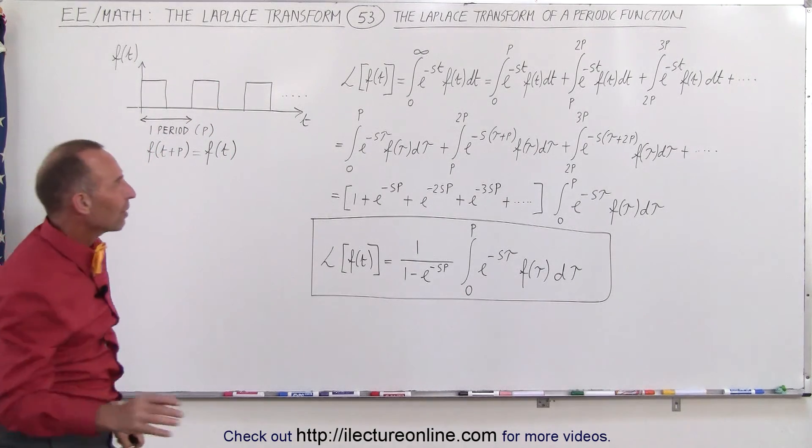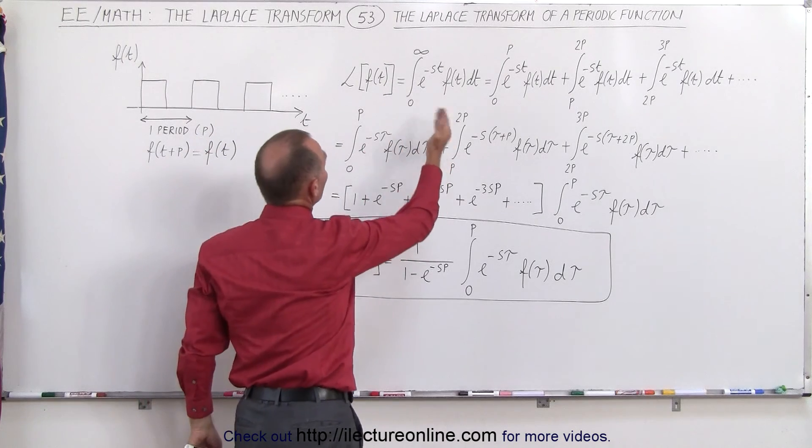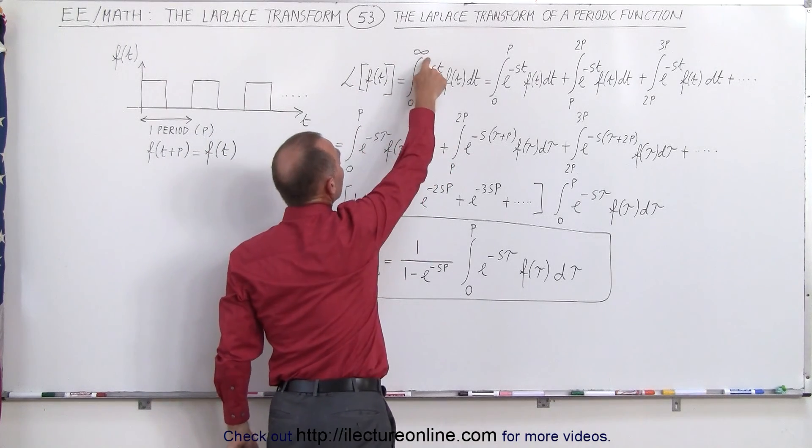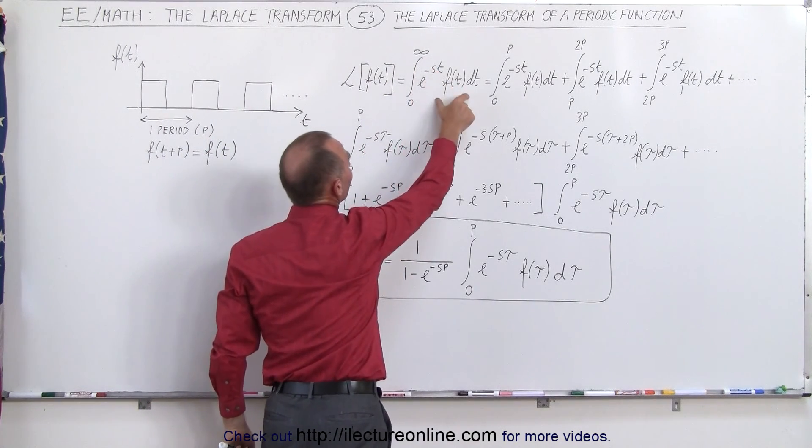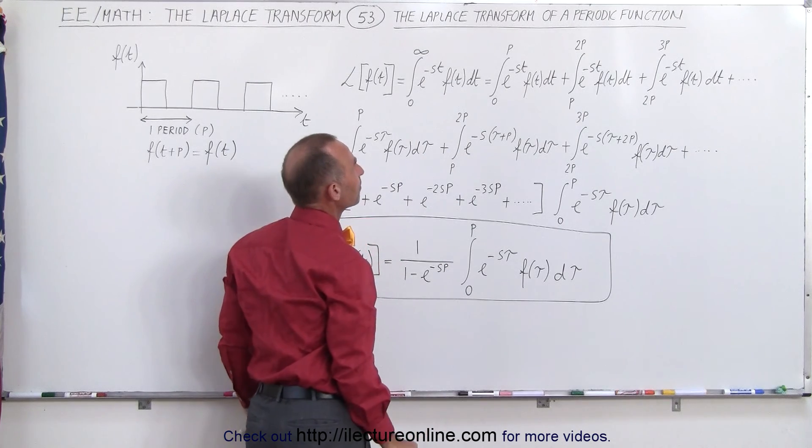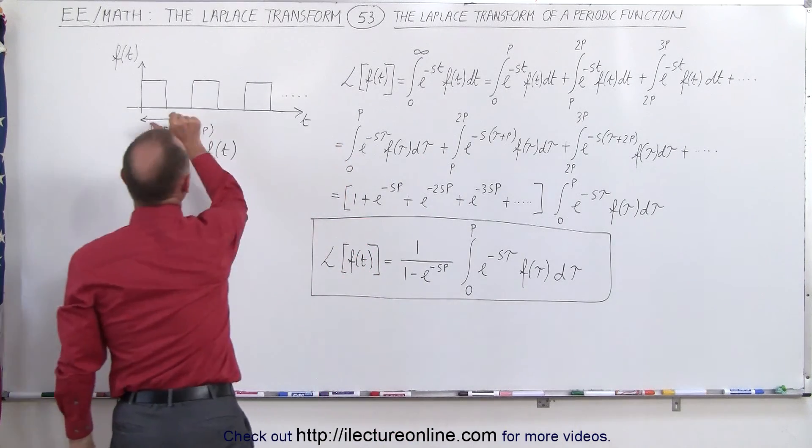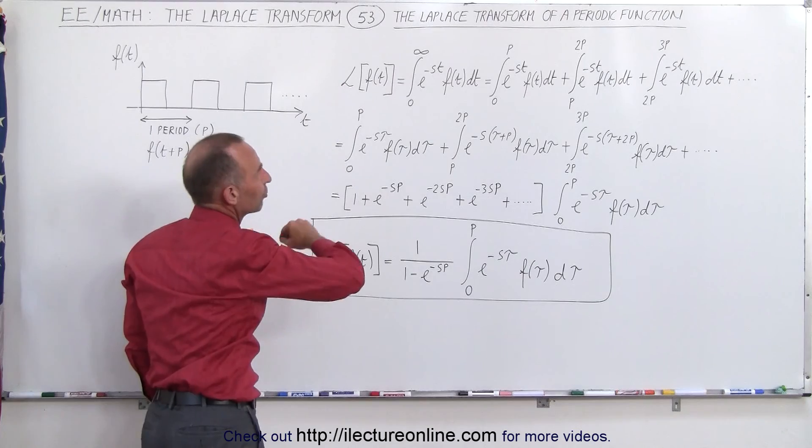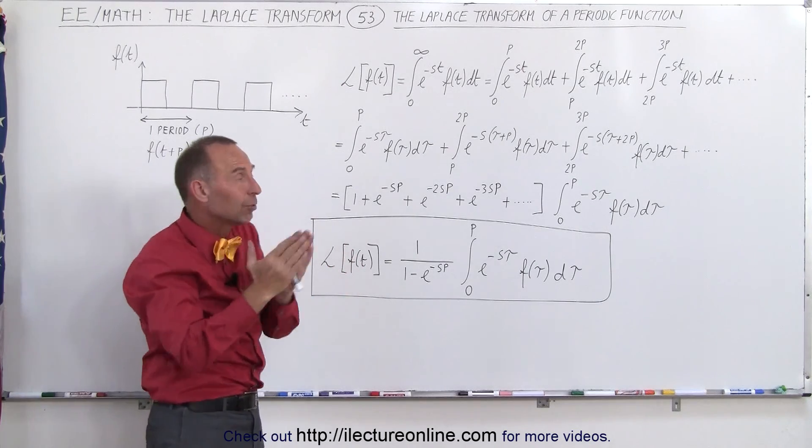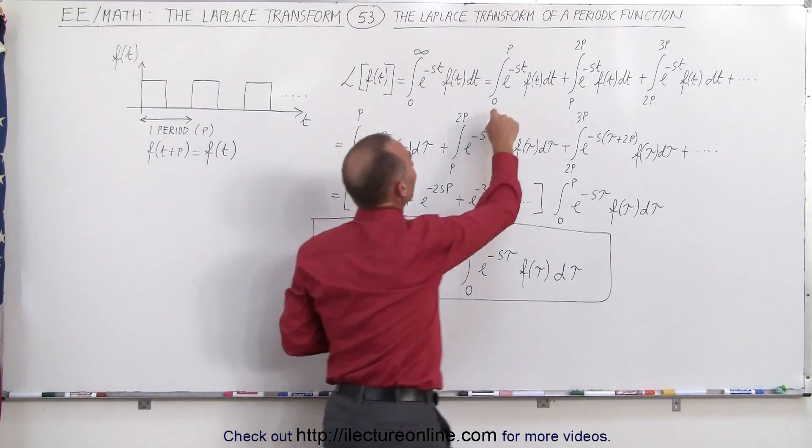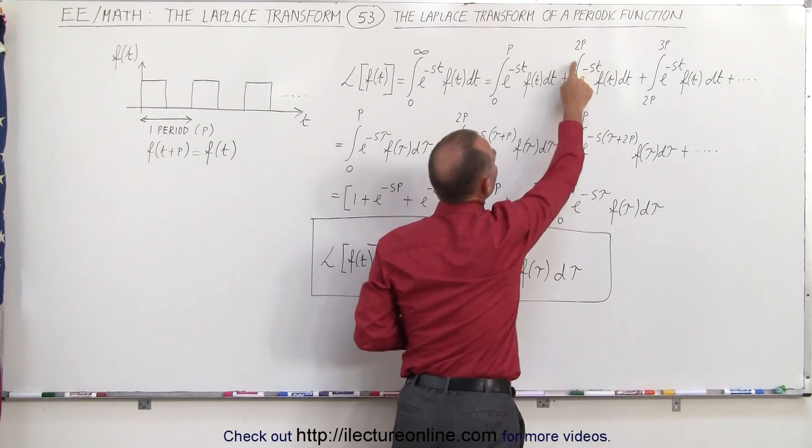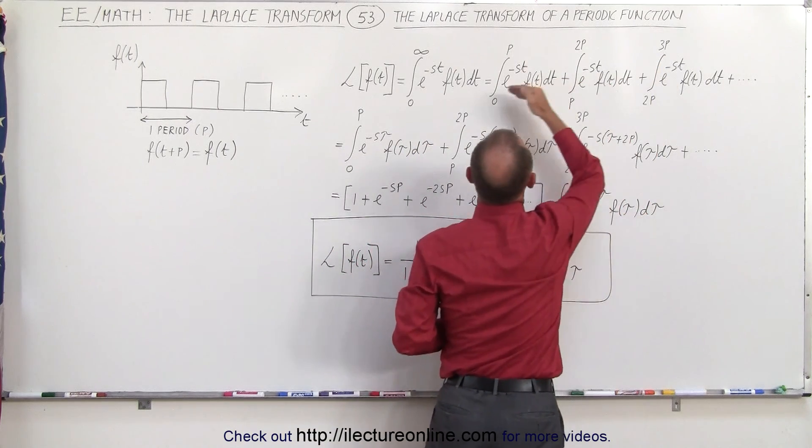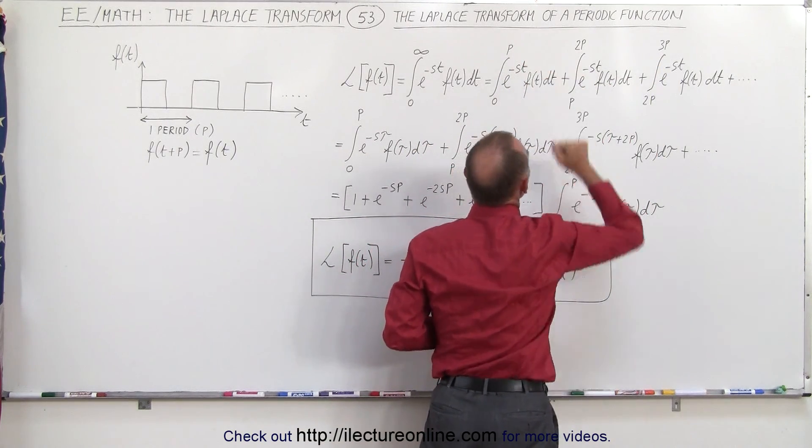The Laplace transform of a function by definition is equal to the integral from 0 to infinity of e to the minus st times the function times dt. And since we have all these multiple pulses in the periodic function, we can say that we can snip it up into pieces where we integrate from 0 to p, from p to 2p, from 2p to 3p, of e to the minus st, f of t dt, and so forth.